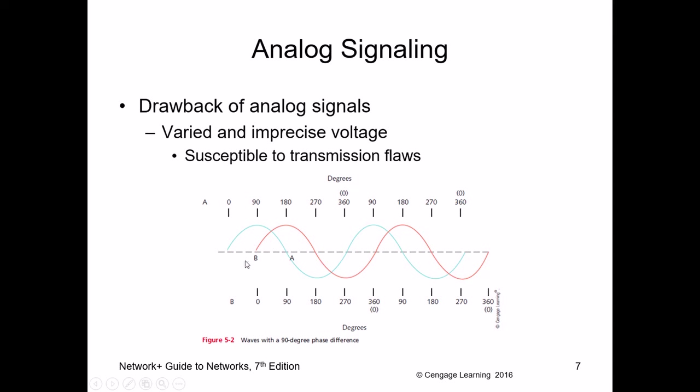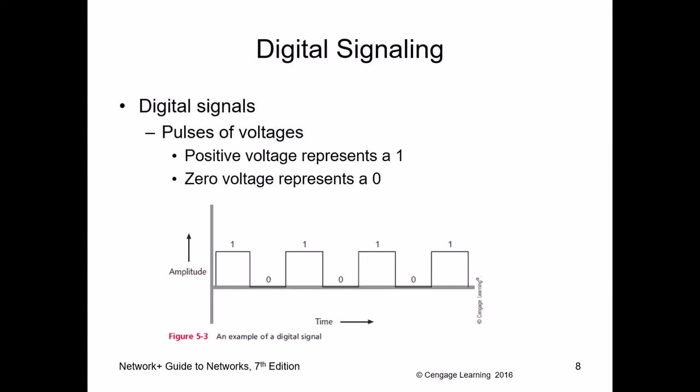The problem with sending an analog signal is that it's susceptible to noise, especially on the amplitude. As the signal travels, the amplitude gets corrupted. That's why in AM radio you can hear hissing and the voice is hardly clear — there's so much noise in it.